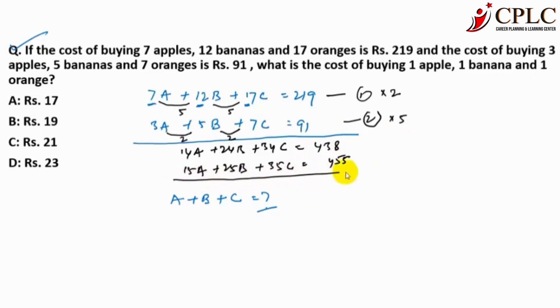Now subtract this equation from this equation. 15A minus 14A is A. 25B minus 24B is B. And 35C minus 34C is C. And again subtract here, 438 from 455, this is 17. So what should be the correct answer? Option number B.